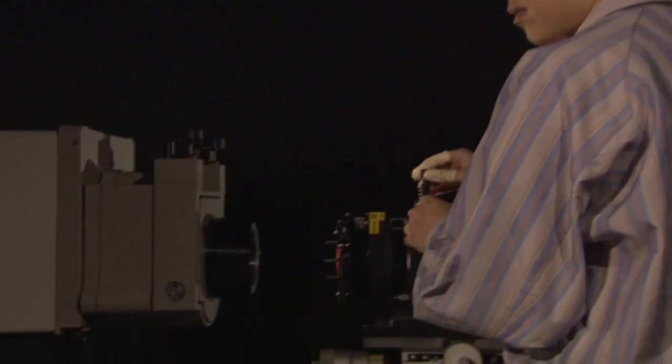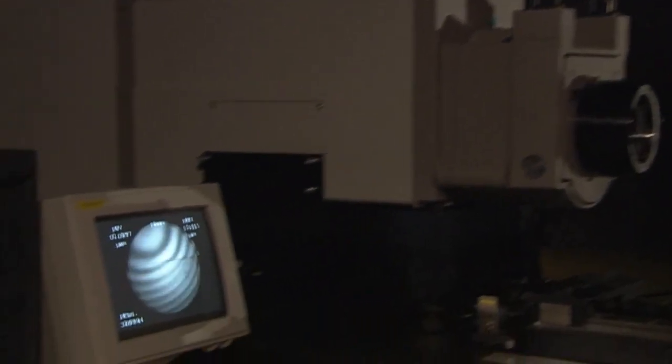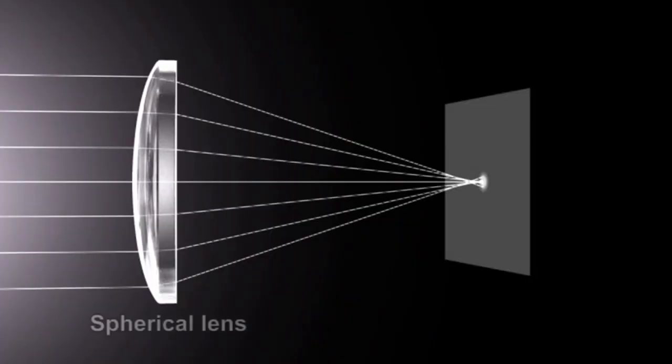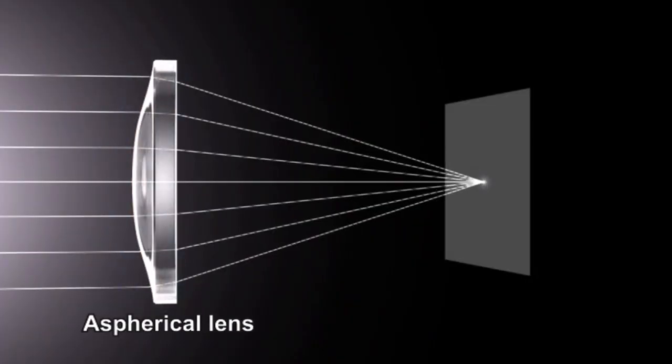Canon has found a revolutionary way to solve the problem of spherical aberration. The solution is an aspherical lens, which is not affected by aberrations on the lens surface.